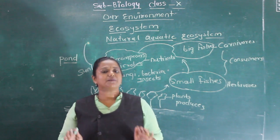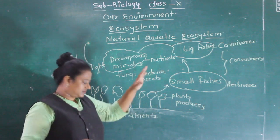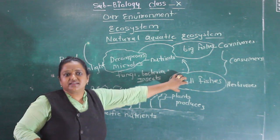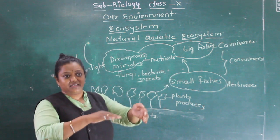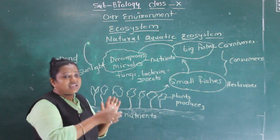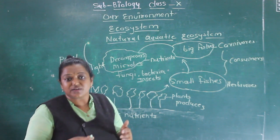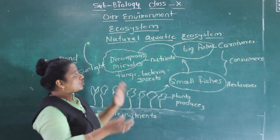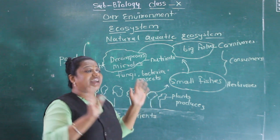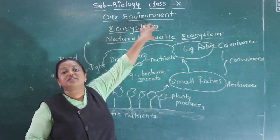Why are these cycles called biogeochemical cycles? Because in those cycles, biotic factors and abiotic factors depend on each other — their interaction is present, and they are living in harmony. Their mutual relationship is maintained; they are dependent on each other and taking help from each other, living in harmony.